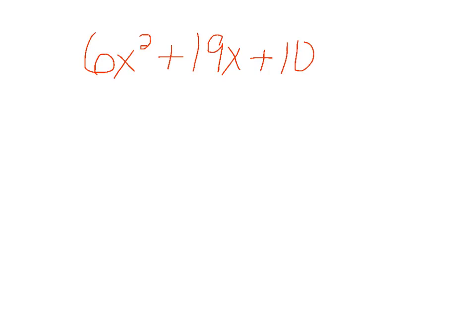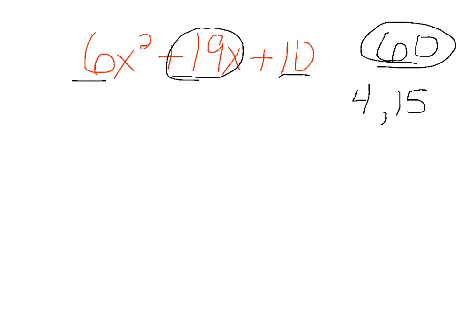Here's one more example of doing the same thing. Multiply 6 times 10 gives 60. We want to know what multiplies to 60 and adds to 19. Well, I believe 4 and 15 are the answer.